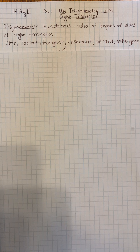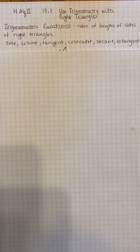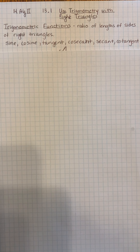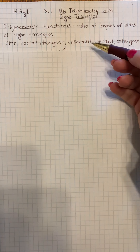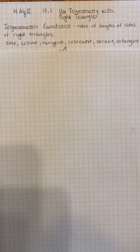Trigonometry is great for triangles, and we are going to be using triangles that have a right angle in them, so they'll be called right triangles. Now, there are six functions that come from trigonometry, and they are ratios of lengths of sides of the right triangle. So we have the sine, the cosine, the tangent, the cosecant, the secant, and the cotangent.